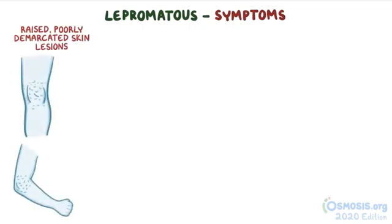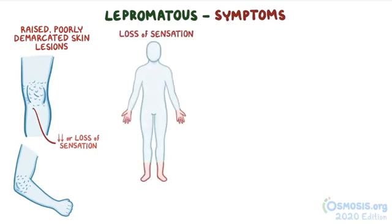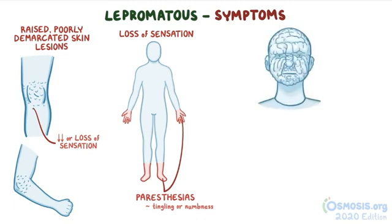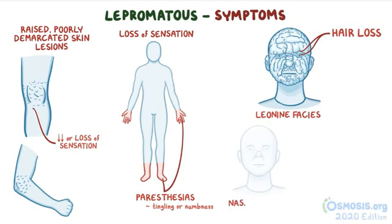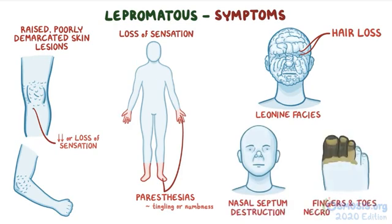With the lepromatous form, there are numerous raised, poorly demarcated skin lesions that can be found on extensor surfaces of the extremities. Within these skin patches there might be diminished sensation or a loss of sensation altogether, and overall there's a loss of sensation in the limbs with a glove and stocking distribution. There might also be paresthesias — abnormal dermal sensations like tingling or numbness in the hands or feet — lumps or swelling on the earlobes or face, which can result in a lion-like or leonine facies, and body hair loss, especially eyebrows and eyelashes. Worst case scenario, things progress towards gradual destruction of the extremities, so the nose might collapse due to nasal septum destruction, and fingers and toes might necrose and fall off.